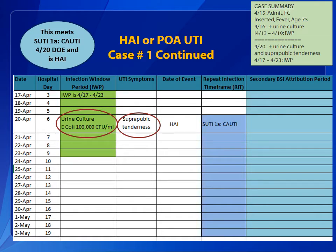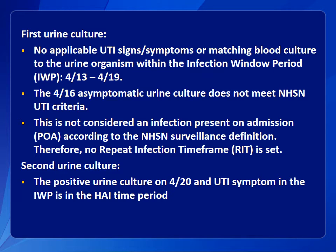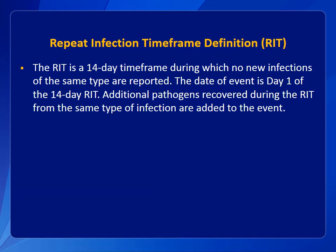This patient has an HAI that would be categorized as a SUTI 1A-COTI. For the first urine culture to be considered an HAI or POA, several requirements were not met. First, there were no UTI symptoms or matching blood culture to the urine organism within the infection window period. The asymptomatic bacteriuria taken on April 16th does not meet NHSN criteria and is considered colonization of the bladder. As the Foley catheter remains in place, it puts the patient at greater risk for symptomatic UTI. After the second urine culture tests positive and the patient develops symptoms within the infection window period, the case becomes an HAI.